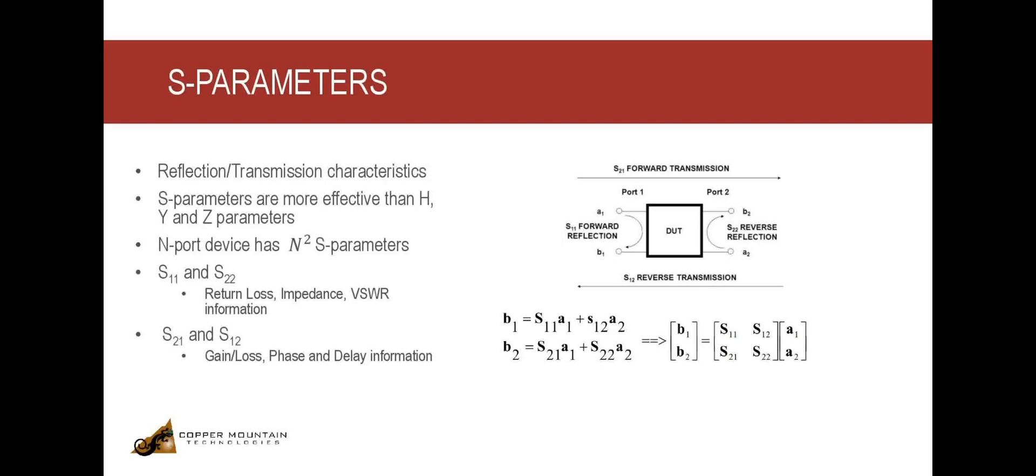Due to these reasons, it is more suitable to use traveling waves instead of total voltages or currents. Hence, S-parameters are a preferred method of characterizing a device at RF and microwave frequencies.